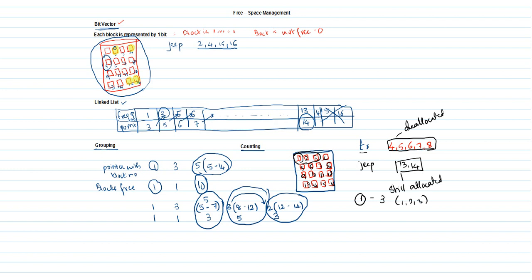Now the file at blocks 4, 5, 6, 7, and 8 is getting deallocated. So block 1 will be updated with the new count: 1, 2, 3, 4, 5, 6, 7, 8, 9, 10, 11, 12. Since blocks 13 and 14 are allocated to another file, the updated count goes from 1 to 12.